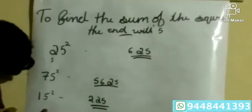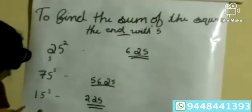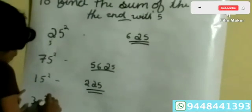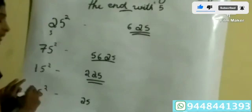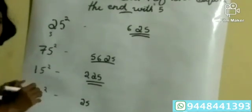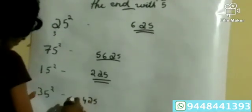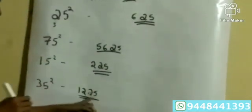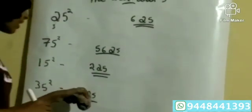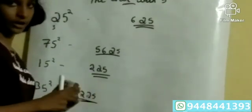Next example, 35 squared. We need to write 25 here. Then 3 plus 1 is equal to 4, and 4 into 3 equals 12. Then the final answer will be 1225.